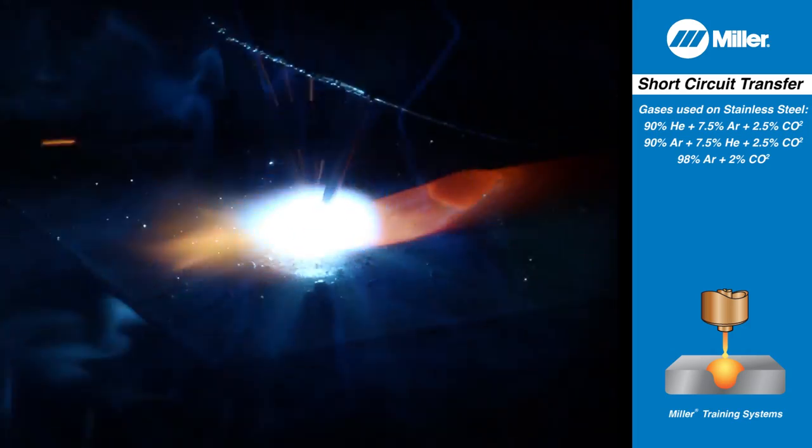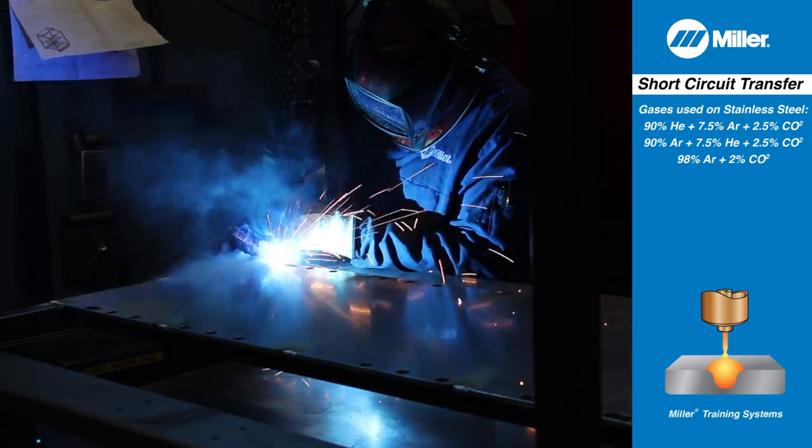Amperage increases to overcome the short, the arc turns back on and the cycle repeats itself.